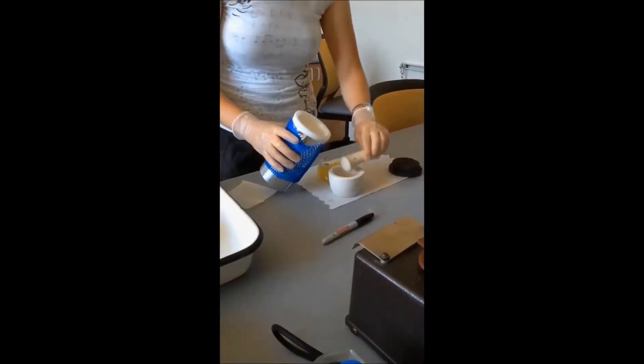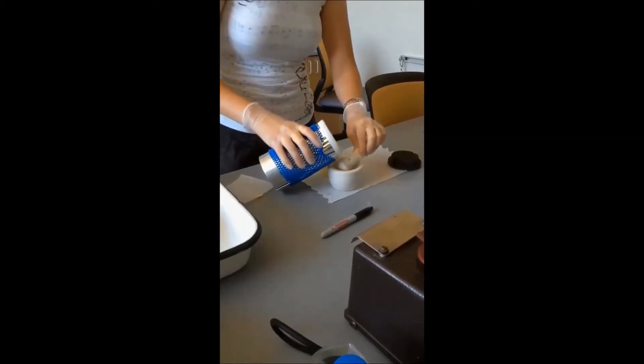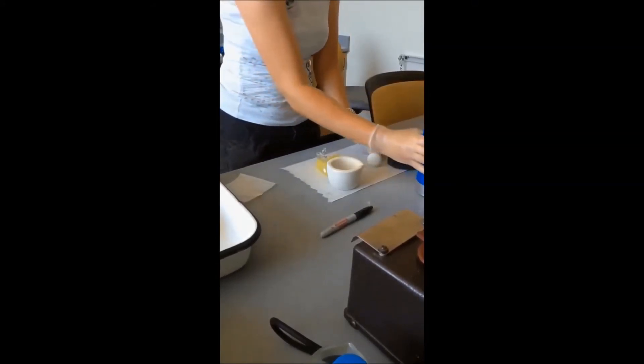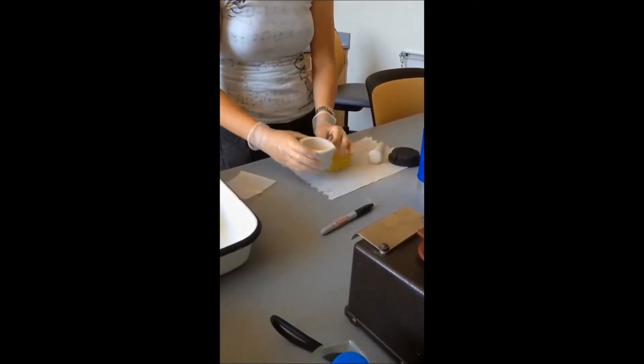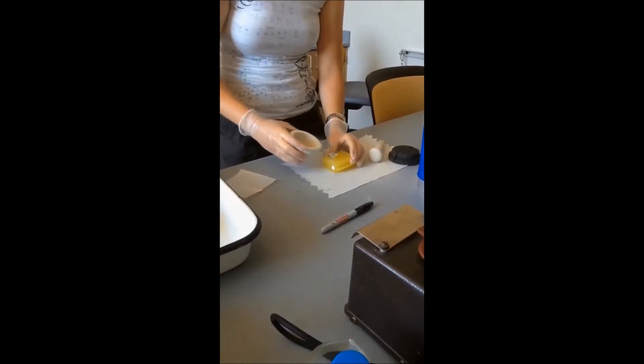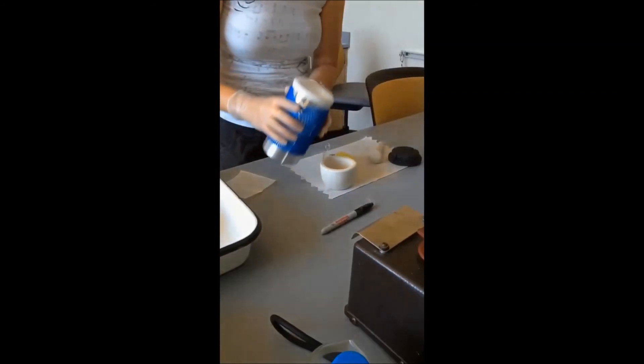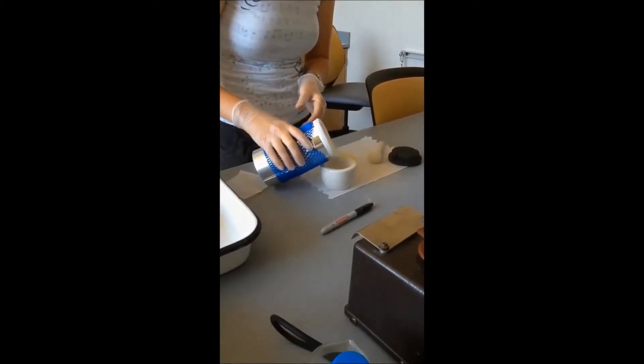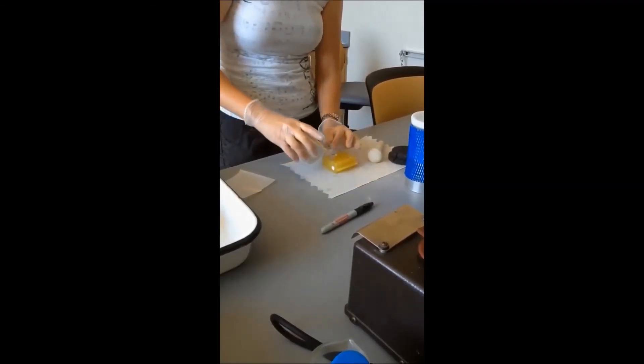So we're going to add the pestle back here just to aid in the transfer. And then we're going to let a little bit of that evaporate off, not too much. And we're going to carefully let a little too much evaporate off that time. And we're going to carefully add it to our tube.